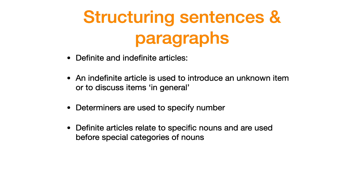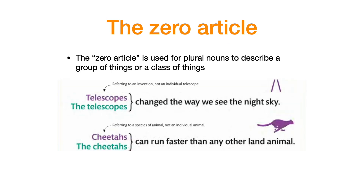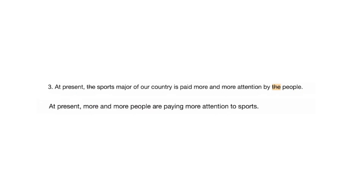The definite article is used when talking about a specific person or thing. The zero article can be used with plural nouns to talk about a class of things — a class of things means a group of things. So when referring to a class or group of things generally, we won't use the definite article; we omit it. So 'sports' and 'people' here don't need the definite article.